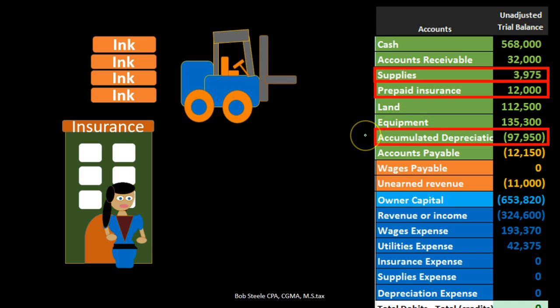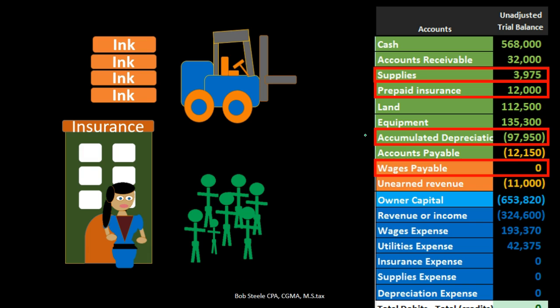Then we have accumulated depreciation, which is going to be another typical adjusting entry we have to make. We're going to have something like equipment, with accumulated depreciation representing the deterioration — or at least the allocation of cost over the useful life of that equipment. That journal entry is going to be a credit to accumulated depreciation, which basically reduces the book value of the equipment, reducing assets as a whole, and then we record the related expense: depreciation expense, the reduction in value of the equipment.